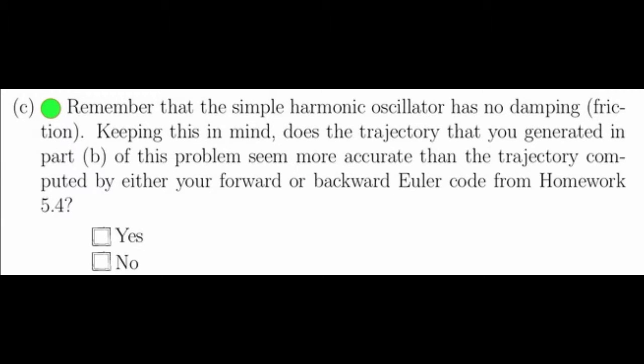For part C, we're supposed to keep in mind that there is no damping in the system, that is that friction is equal to 0, and decide whether the trajectories you generate with forward and backward Euler in homework 5.4 are more accurate or less accurate than the trajectory you generate with the trapezoidal method. I think the best way to approach this is to simply plot all three on the same plot. If we do that, we get this plot.